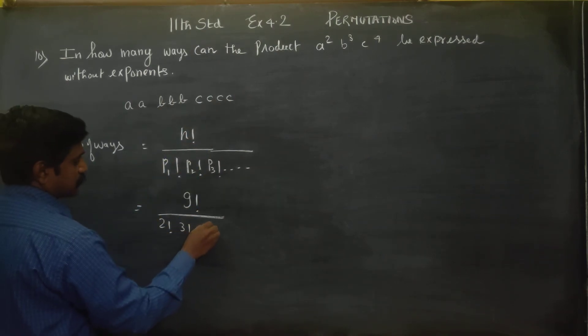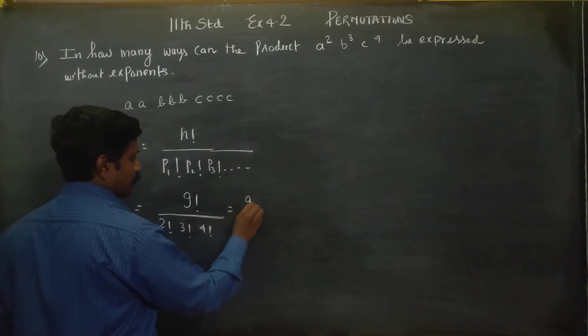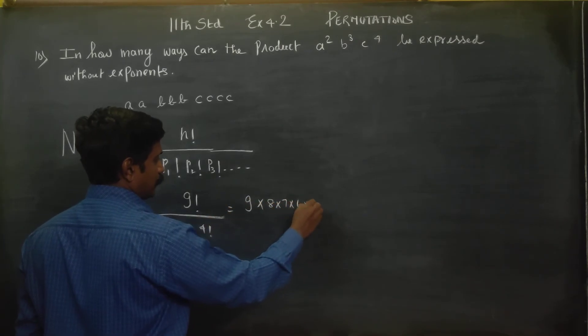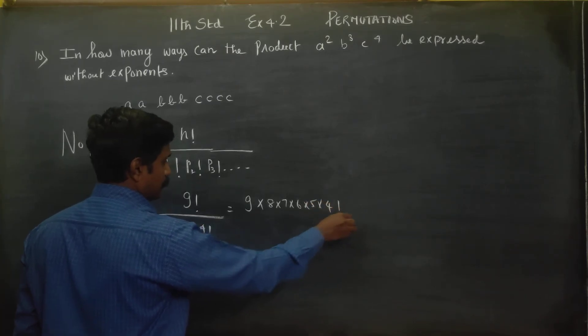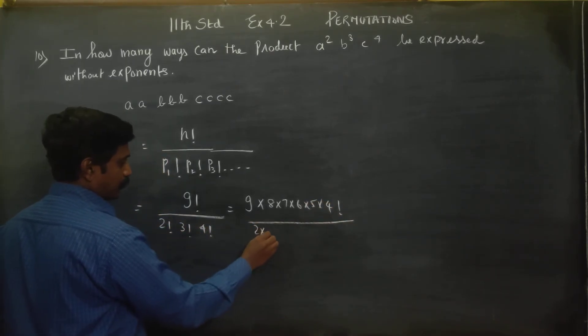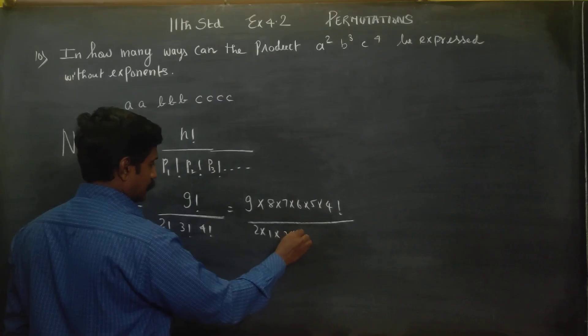9 factorial can be written as 9 into 8 into 7 into 6 into 5 into 4 factorial. 2 factorial is 2 into 1, 3 factorial is 3 into 2 into 1.